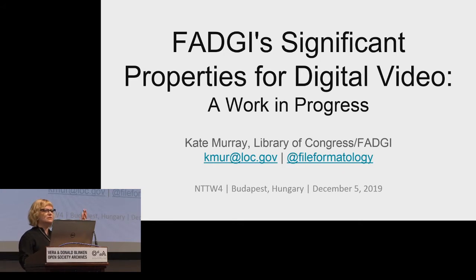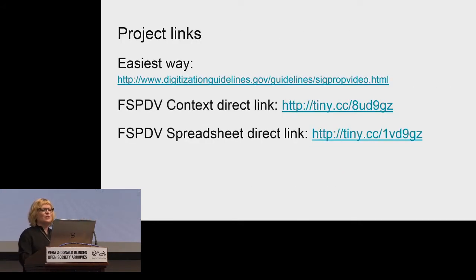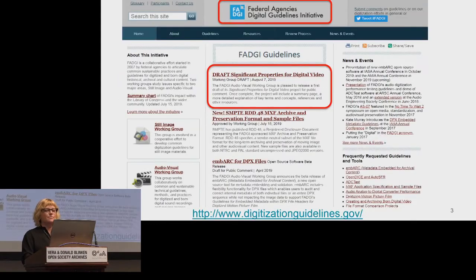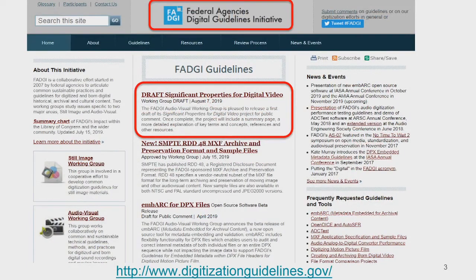Kieran mentioned significant properties — and Kieran is in the audience — so FADGI has been working on a project. Here are the links I'm going to be talking about today. You can find everything at the FADGI website, which is digitizationguidelines.gov. FADGI is a terrible acronym, but for good people doing great work. It stands for the Federal Agencies Digital Guidelines Initiative.